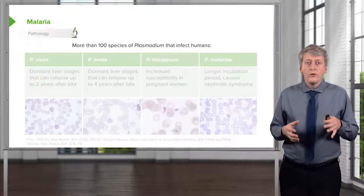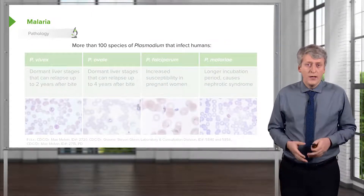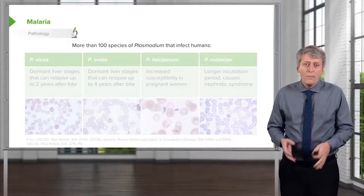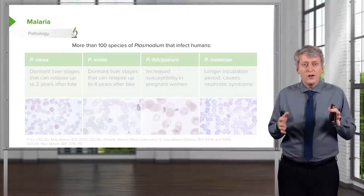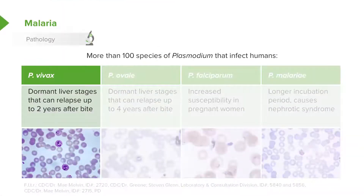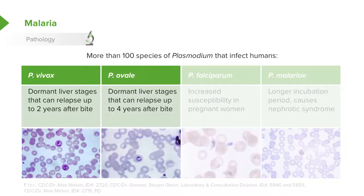There are more than 100 species of plasmodium that can infect humans. It's not necessary to remember all these different species, but there are a few that are key to understand because they are somewhat different in how they come on. P. vivax is clearly different because the liver dormant stage can relapse up to two years after the bite — in other words, a patient can have a period of two years when they're relatively asymptomatic before developing symptoms of malaria. P. ovale: that relapse can be even four years after the bite.